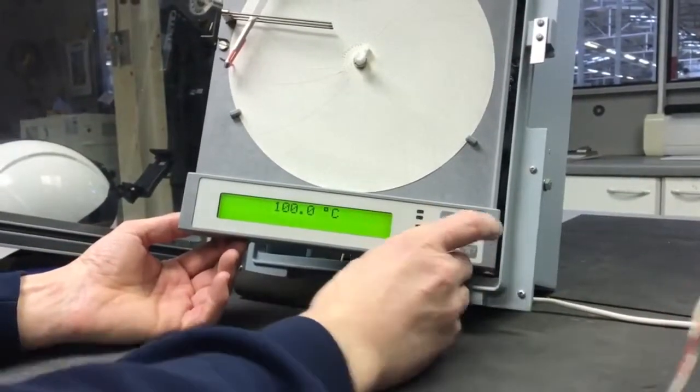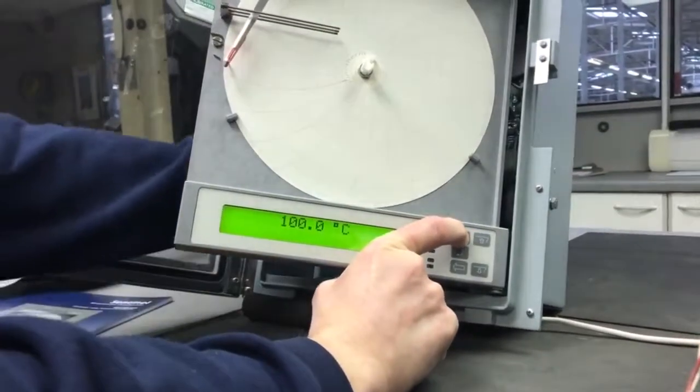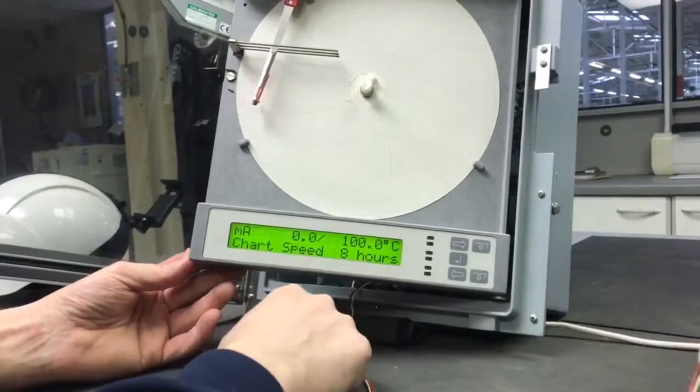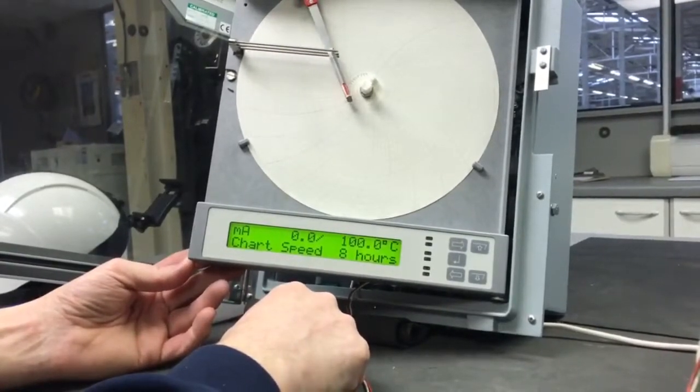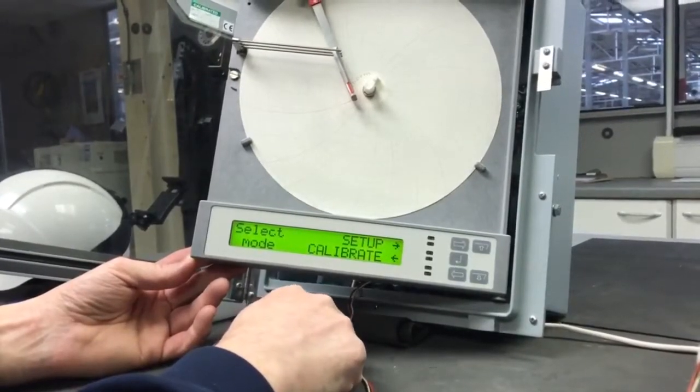We need to enter the setup mode. Press one of the arrow buttons, press and release the reset button, and release the front arrow button. The pens will drive to the bottom of the chart, then you get a message on the display: setup and calibrate.